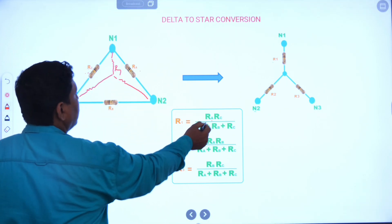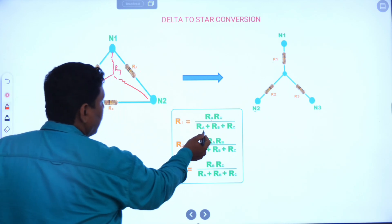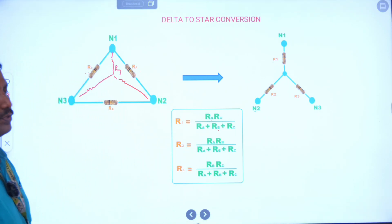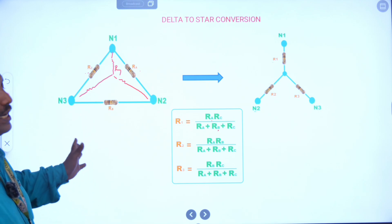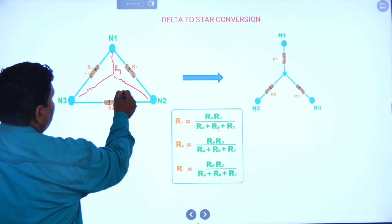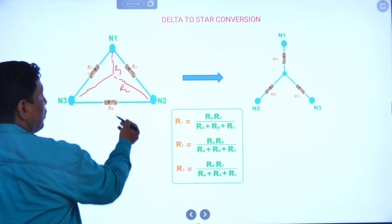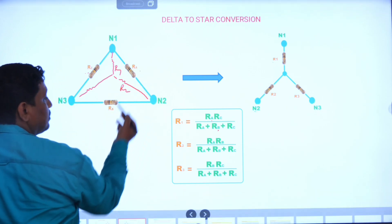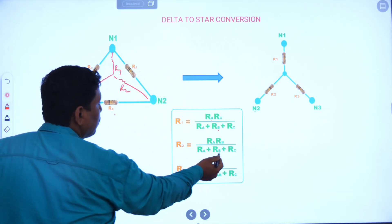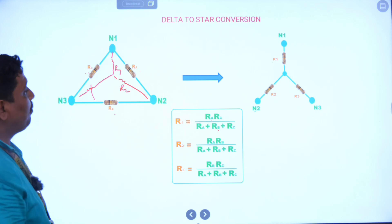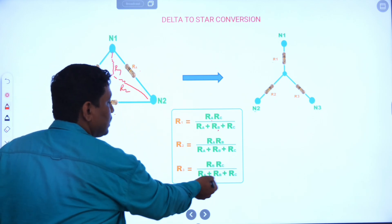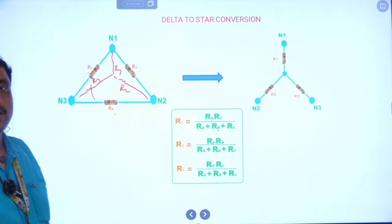R1 is the product of adjacent delta resistances divided by the sum of all delta resistances. Similarly, R2 is the product of adjacent delta resistances divided by the sum of delta resistances. R3 is also found using the same formula: product of adjacent delta resistances divided by sum of all delta resistances.